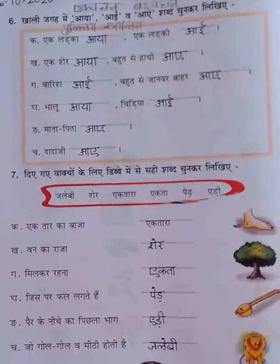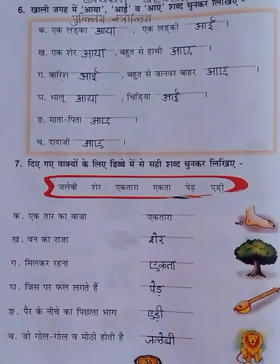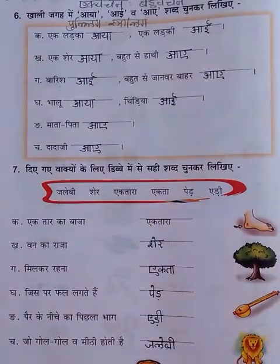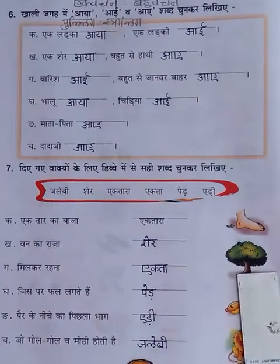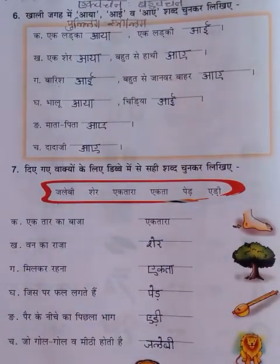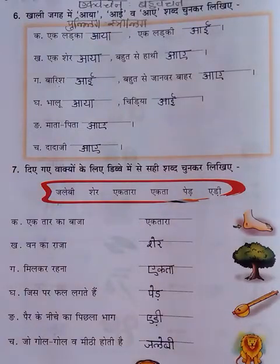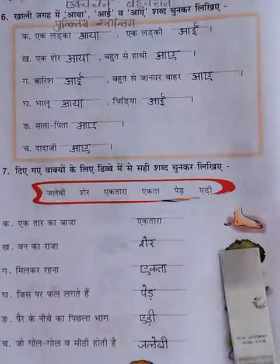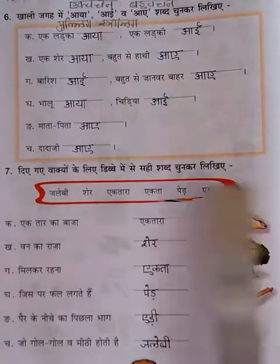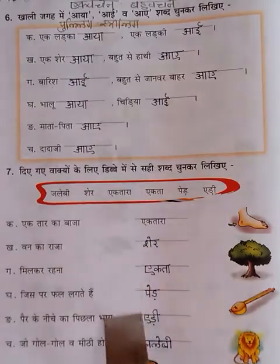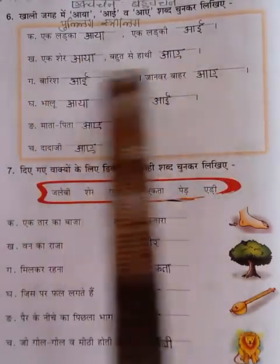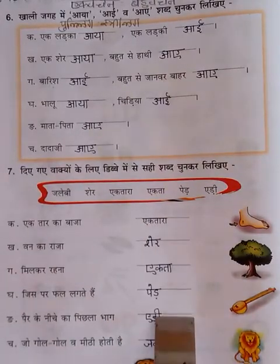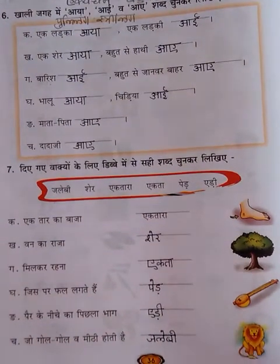Today we have completed lesson number 9 in the Bhasha Abhyas book. Now let's talk about homework. Today's homework is: you will have to read this page two times. Aaj ka homework reading work hai — question number 6 and question number 7, ye saari chijein — aapko do baar reading karni hai.